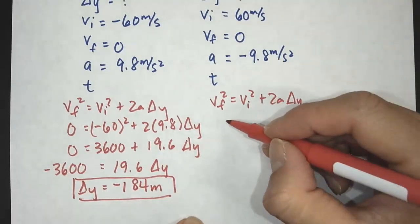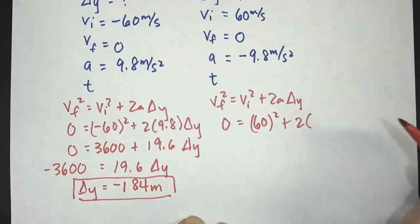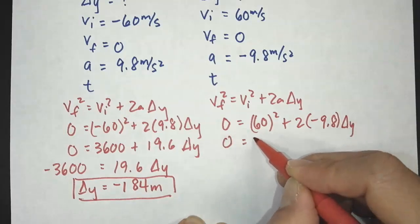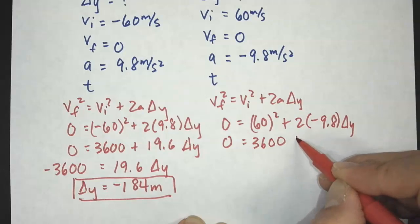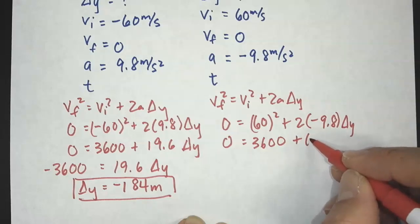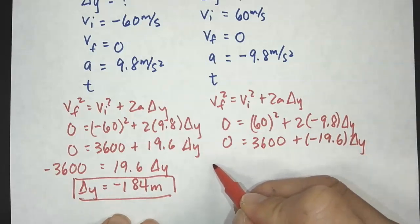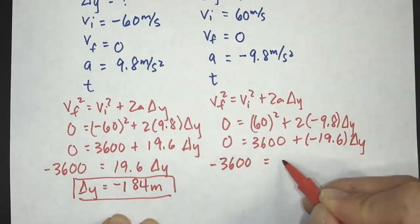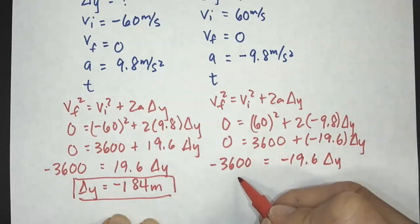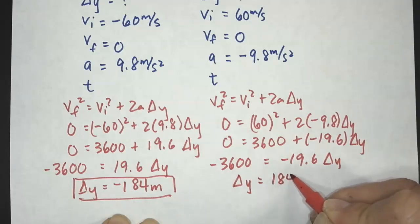For the up-positive case: 0 = (60)² + 2(−9.8)ΔY, which gives 0 = 3600 − 19.6·ΔY. Subtracting 3600 from both sides gives −3600 = −19.6·ΔY. The negatives cancel out, and ΔY equals 3600 divided by 19.6, which gives positive 184 meters.